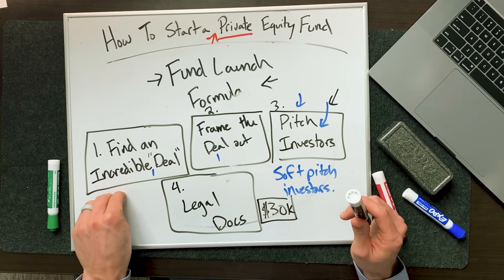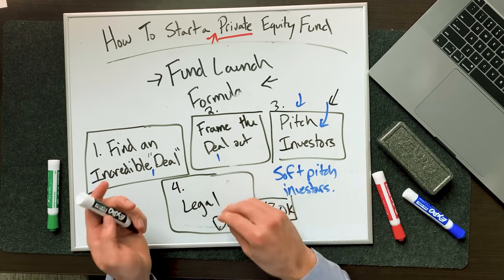That is the fund launch formula. Step number one: find that incredible deal. Step two: frame it out. Step three: pitch investors. Step four: legal docs. Now a question at this point is, Bridger, how do I find that incredible deal? There are great sites out there — BizBuySell.com, Empire Flippers — that are actually brokered services for businesses, even small-scale businesses listed to sell. It's a great way to get your feet wet. But if you say, 'I get the idea, I understand the general partner, limited partnership, the split — but I don't know if I have the network to raise money or the expertise to go out and find and buy private equity businesses,' that's okay.